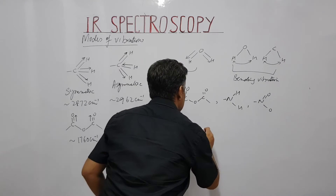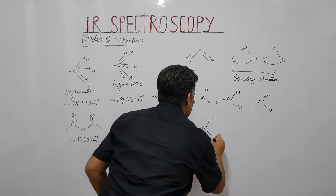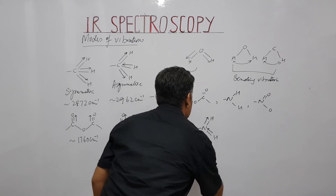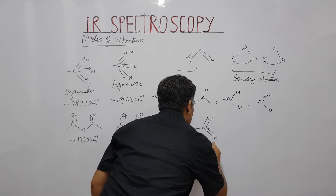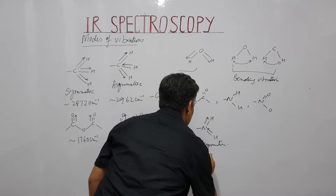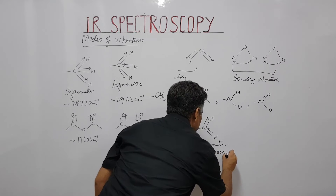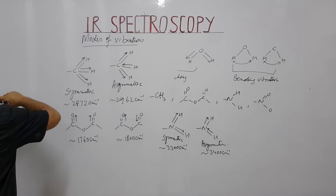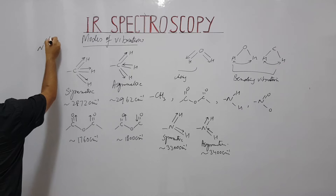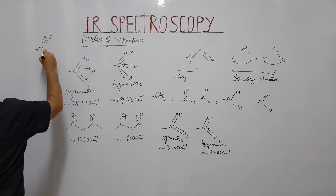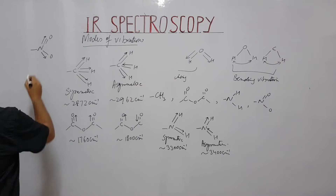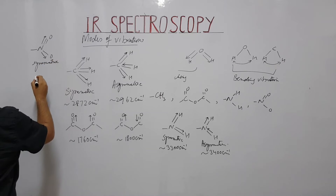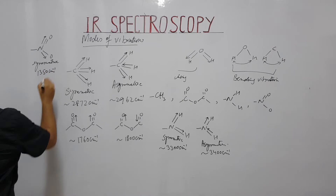For NH2, the anti-symmetric stretch appears at 3400 cm⁻¹. For the nitro group (NO2), we similarly have symmetric and anti-symmetric stretching. The symmetric stretch of the nitro group appears at 1350 cm⁻¹, and the anti-symmetric stretch appears at a higher wavenumber.